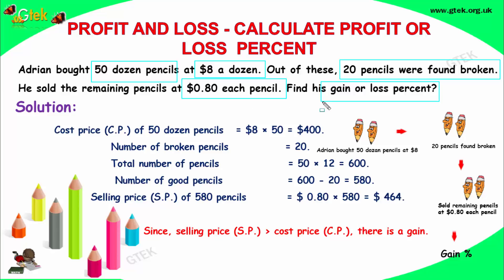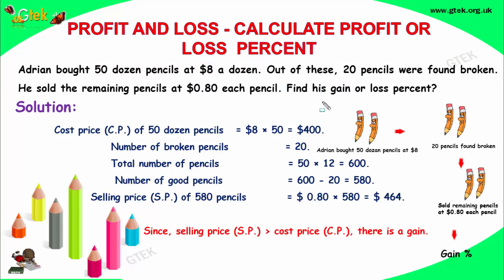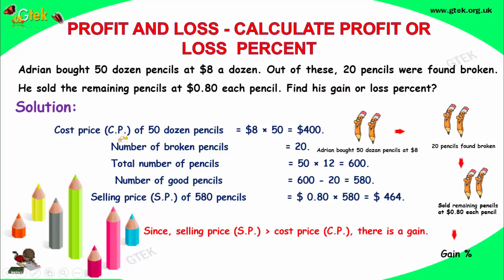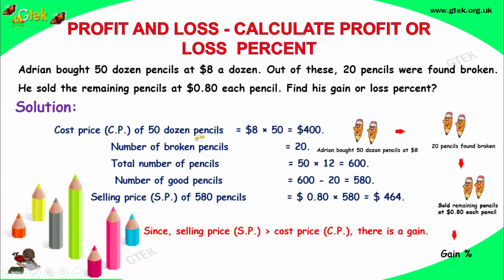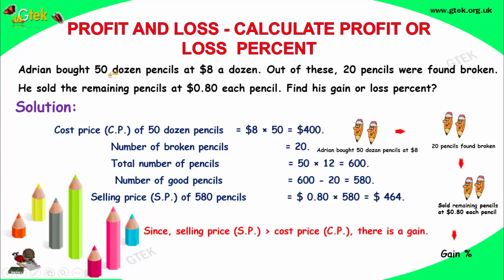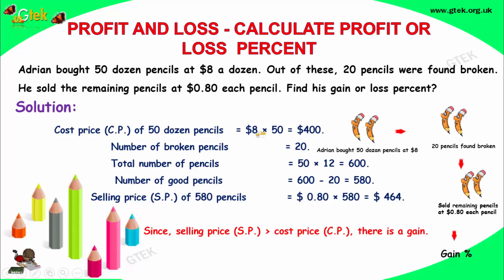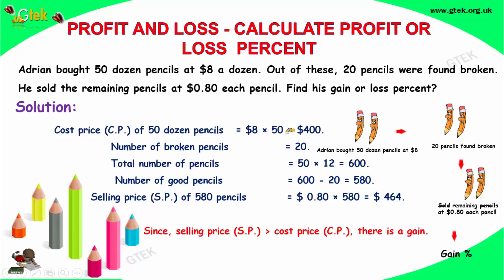Now, cost price of 50 dozen pencils: 1 dozen is 8 dollars, so 50 dozen is 50 into 8, that is 8 dollars into 50. So we get 400 dollars.